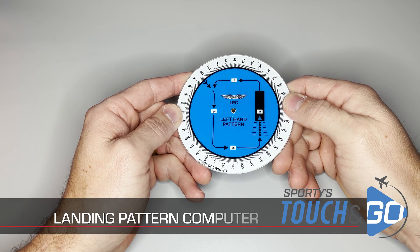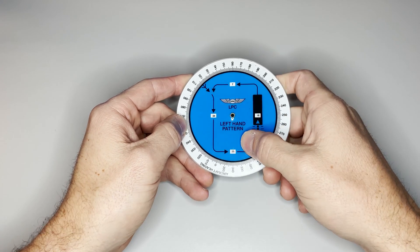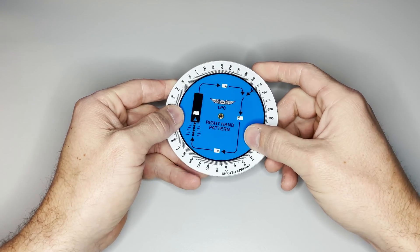How to use ASA's landing pattern computer. There are two sides to this computer, one for standard left hand patterns and the opposite for right hand patterns.